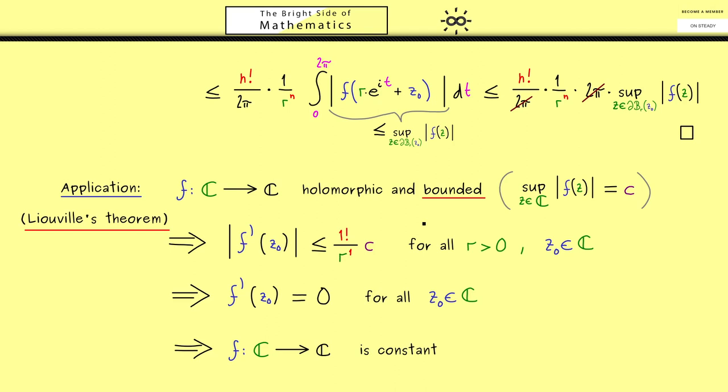Therefore if you see an entire function that is clearly not constant then you know it's also not bounded. So for example the sine function defined in the complex numbers is clearly holomorphic, entire but not constant. Therefore we know it's also not bounded. So you know it's bounded for real numbers but it can't be bounded for complex numbers.